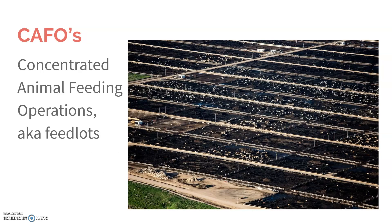There are two main types of meat production. There are CAFOs, or concentrated animal feeding operations, otherwise known as feedlots. You'll also see the terms factory farms or industrialized meat production — these are all different terms thrown around to describe the same thing.